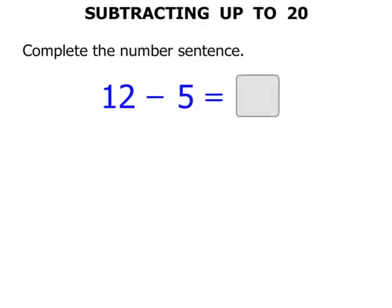Now in this lesson we do some work on subtracting up to 20. Complete the number sentence. We've got 12 minus 5 equals something. Now you might already know this answer. That's great if you do. But if not, we can use some objects to help us out.